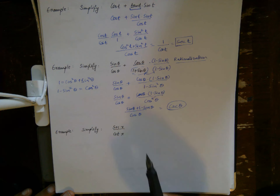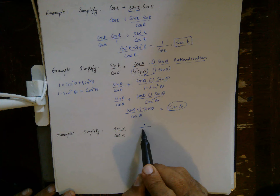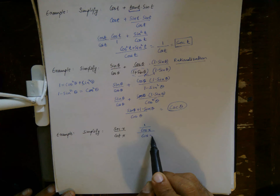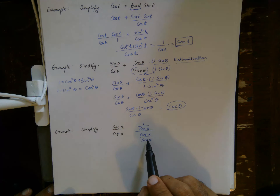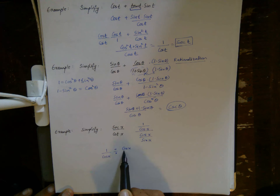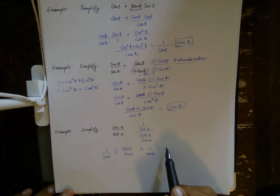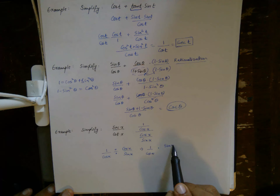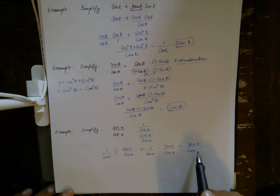The next example is secant over cotangent. This is fairly straightforward and uses your knowledge of fractions of fractions. Secant is 1/cosine and cotangent is cosine/sine. When you have complex fractions like this, you can rewrite them with a division sign and then use the fact that division is just multiplying by the reciprocal.